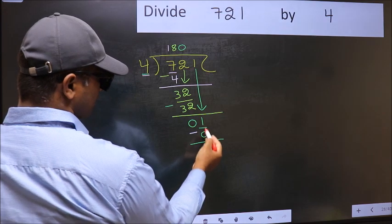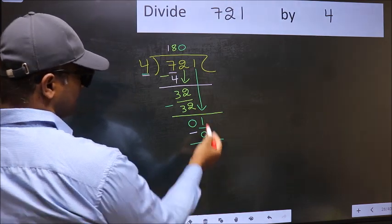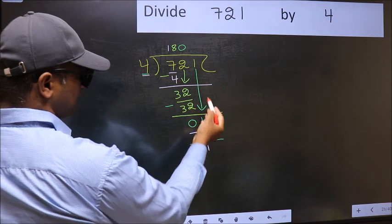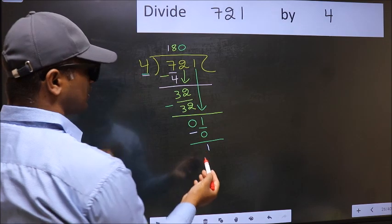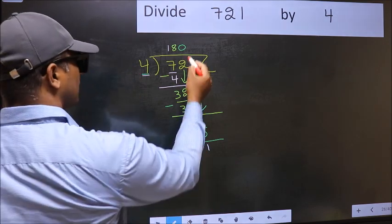Over here, we did not bring any number down, and 1 is smaller than 4. So now you can put a dot and take zero.